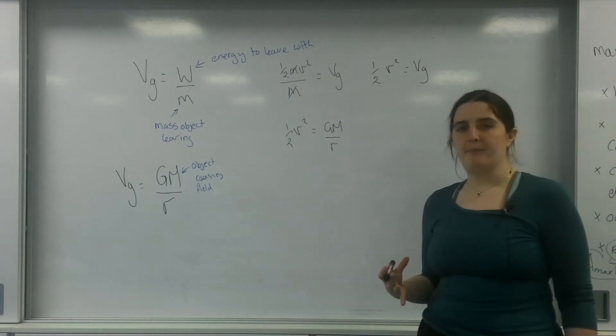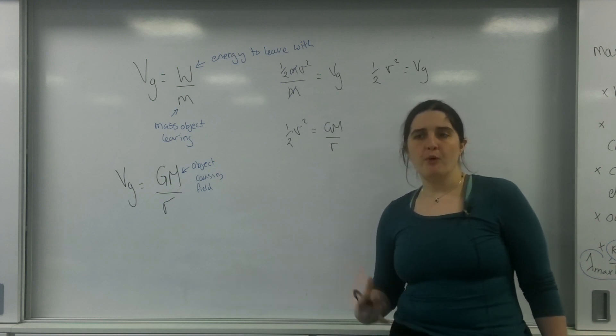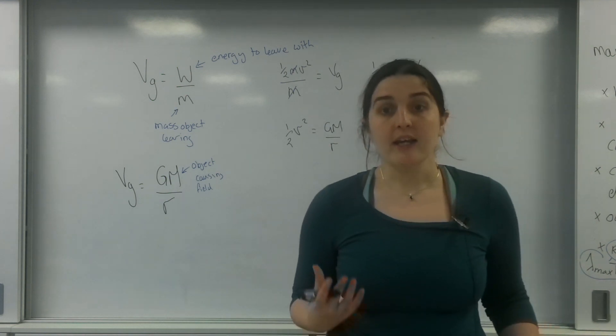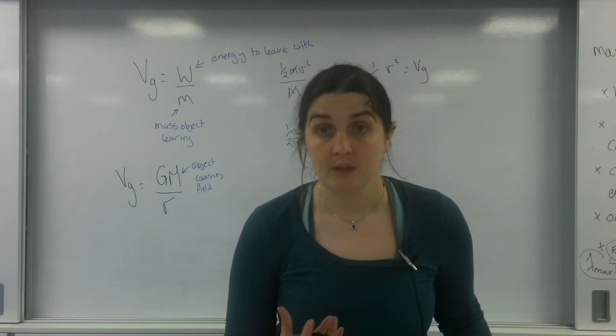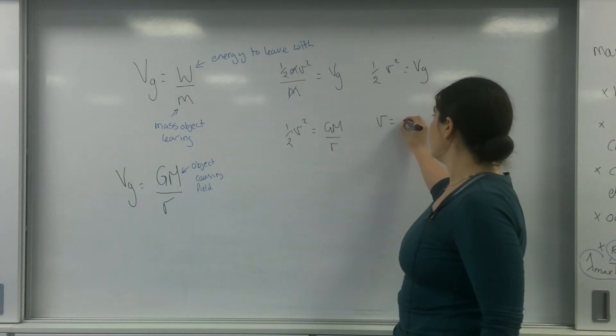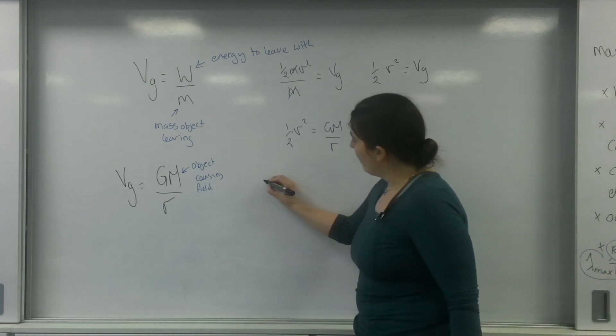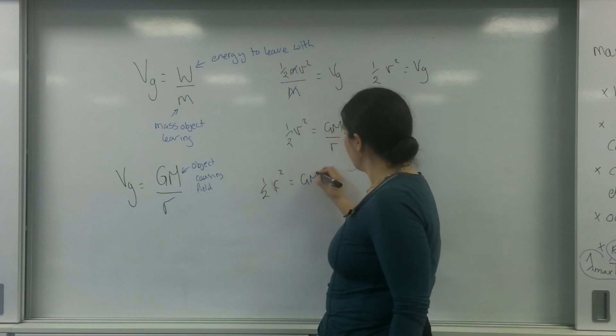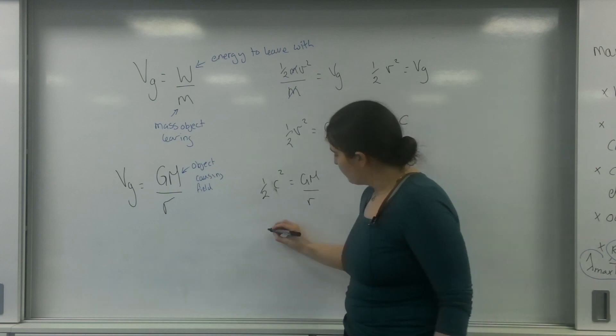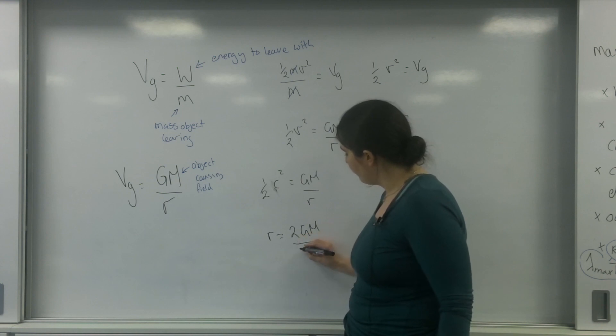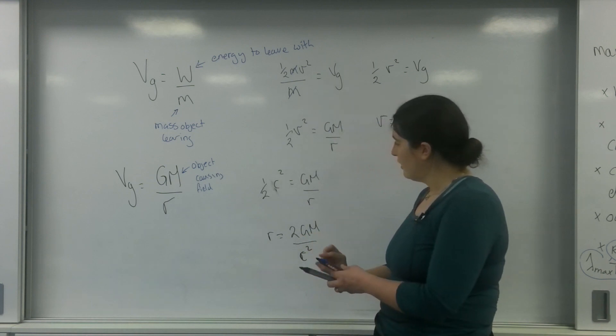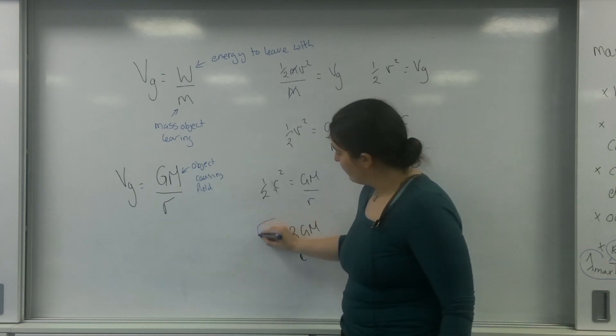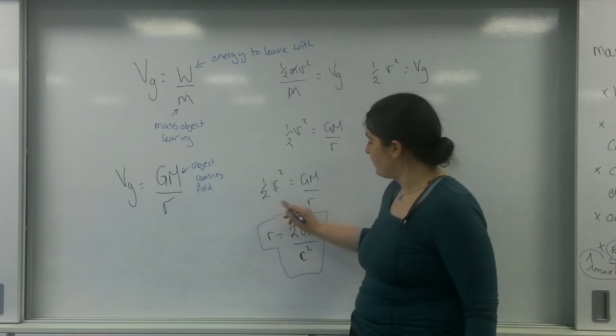And we are talking about a limit. I'm talking about the point where not even light can escape. I cannot go faster than the speed of light. So I'm going to say that this v equals the speed of light. So I have a half c squared equals GM over r. So I have r equals 2GM over c squared. That is the formula for the Schwarzschild radius.